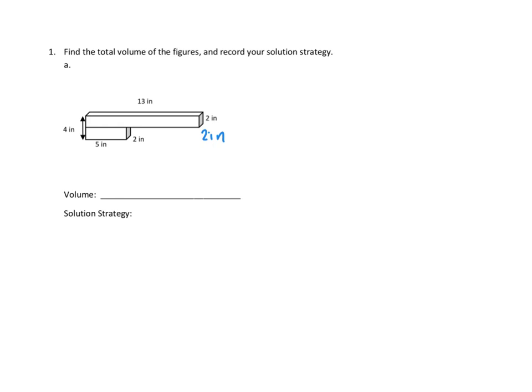And how about the smaller rectangular prism? I've got the length, and I've got the width, and then the height. How tall is this part? Well, if I stack them both together, they're four inches tall, and this one on top is two inches tall. So I guess that means that this bottom part must be two inches tall. So I think that gives us enough information to figure out our two rectangular prisms.